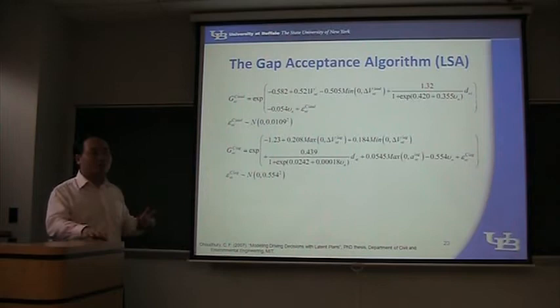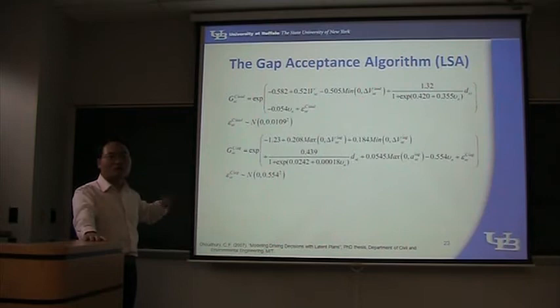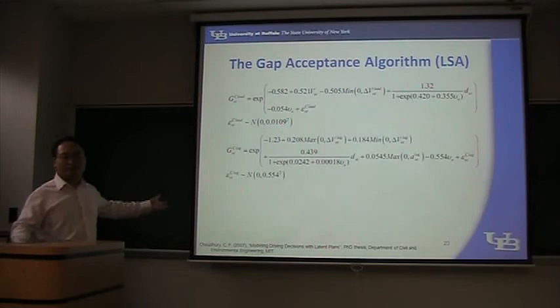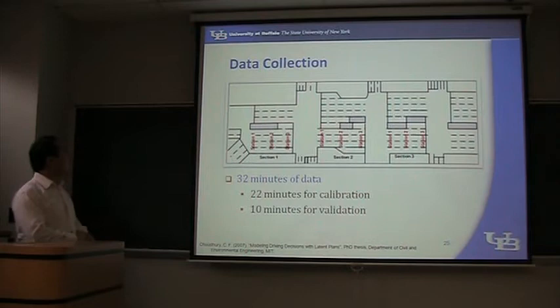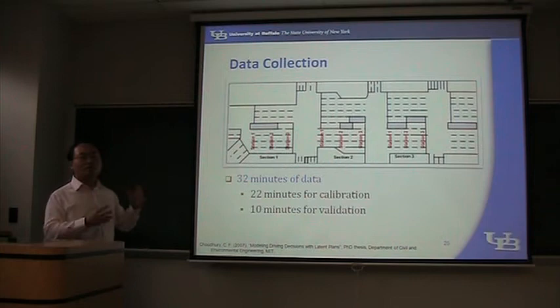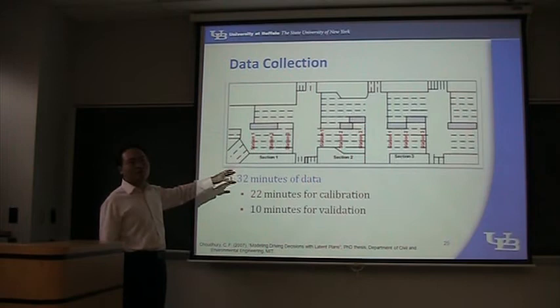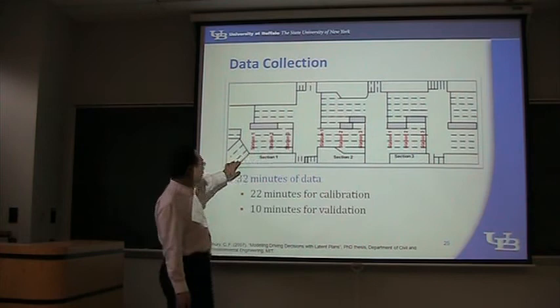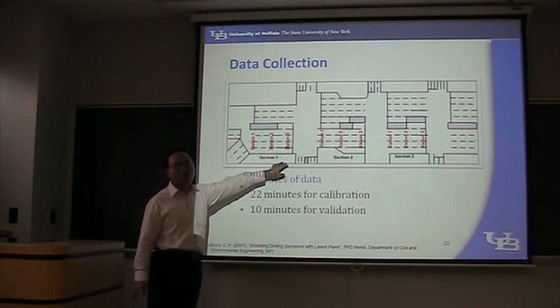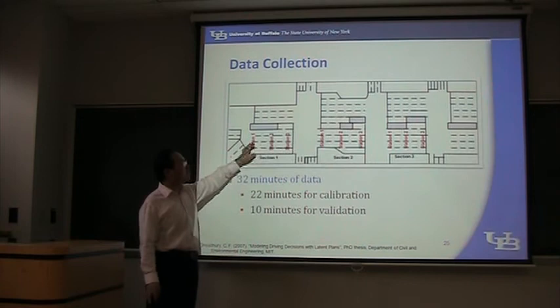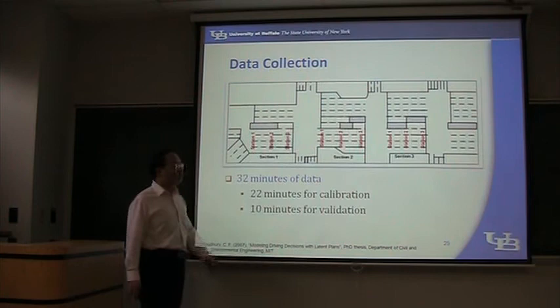Do you understand the basic idea of this algorithm? They use discrete choice models — that's the main difference. Now let's go to the last part: data collection. In order to validate or calibrate their model, they need data. They have three sections with three detectors at different positions in each section. So in section one there are three stations, section two has three stations, and the same for section three.